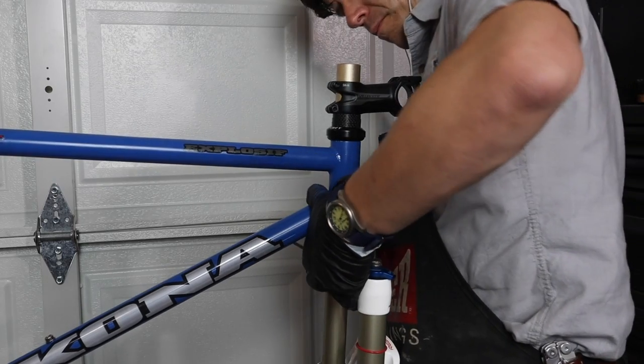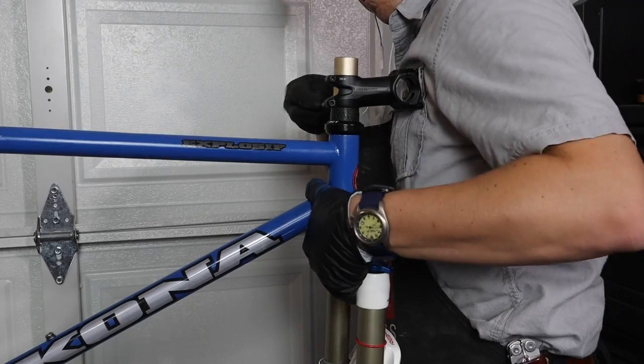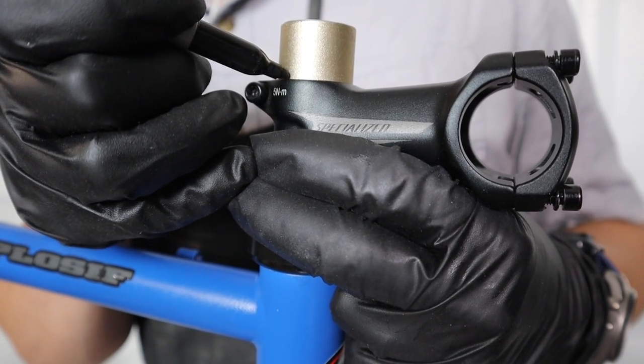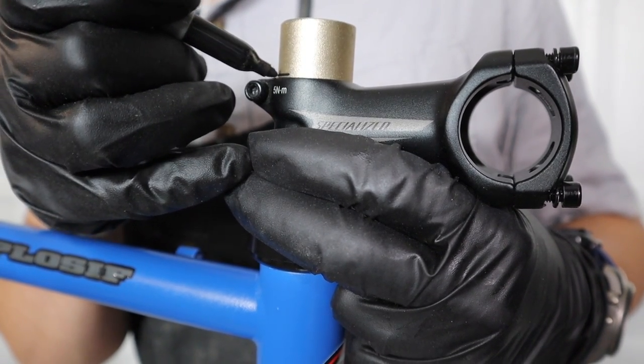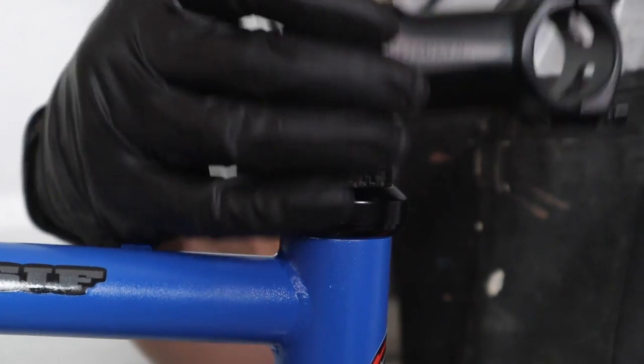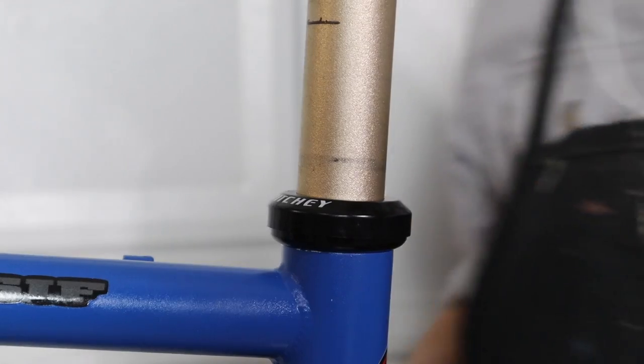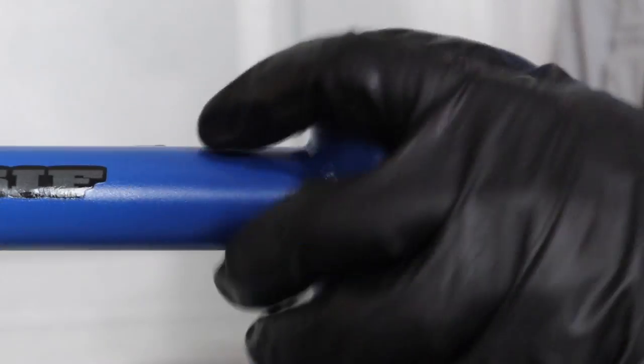The fork I found for it also was great. It's a RockShox Reba RL, I believe from 2011, with 100 millimeters of travel and a steerer tube that was longer than I needed, which is good because I can set it for the height I want.